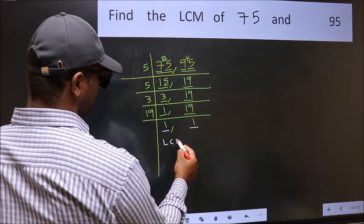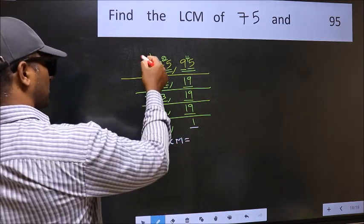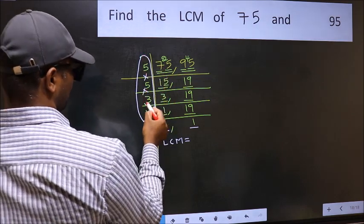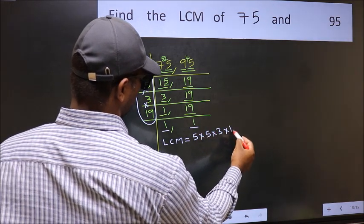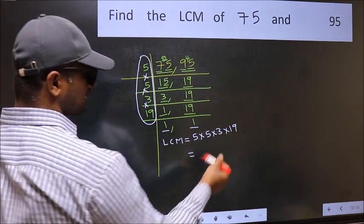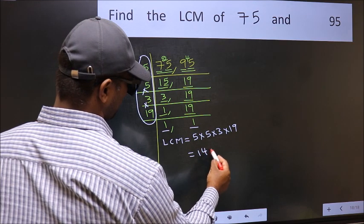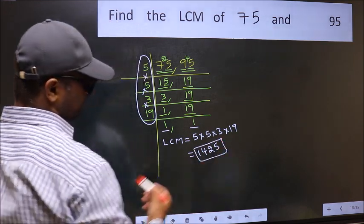So our LCM is the product of these numbers: 5 times 5 times 5 times 3 times 19. When we multiply these numbers, we get 1425. This is our LCM.